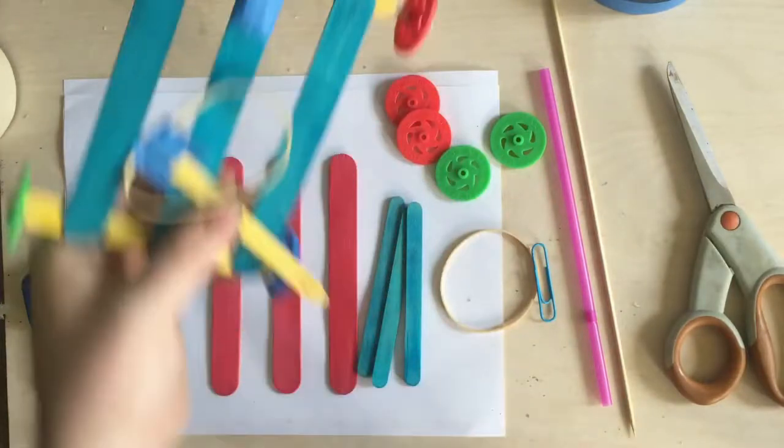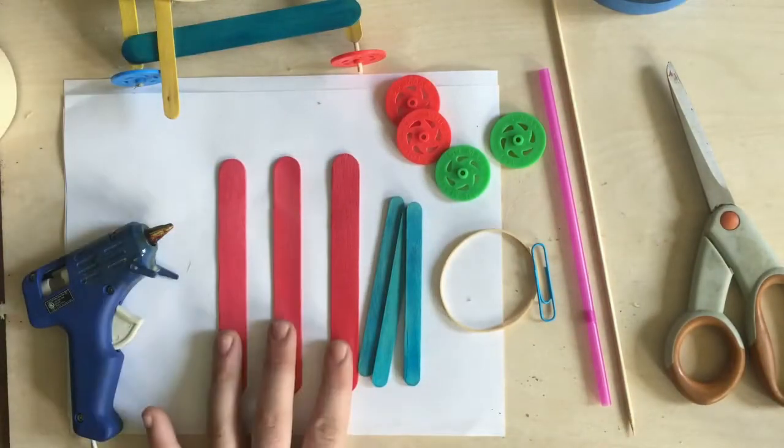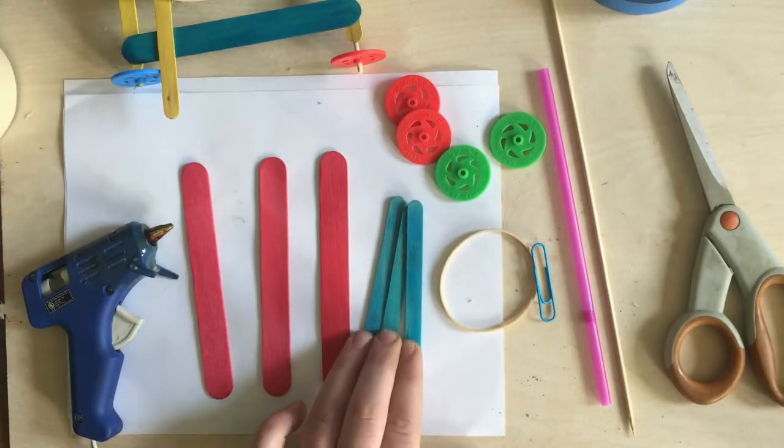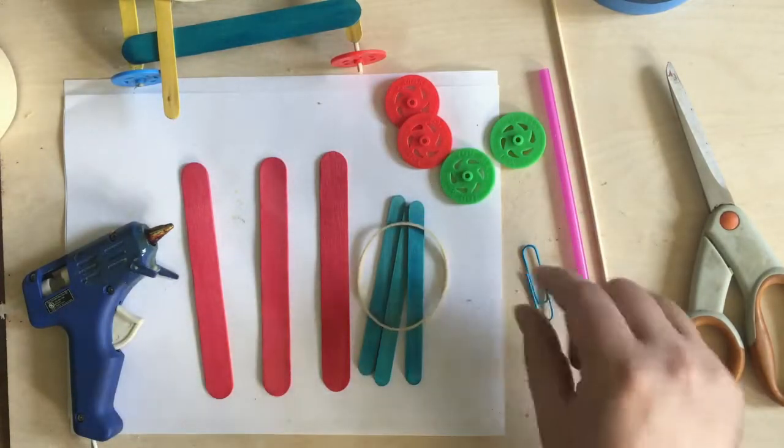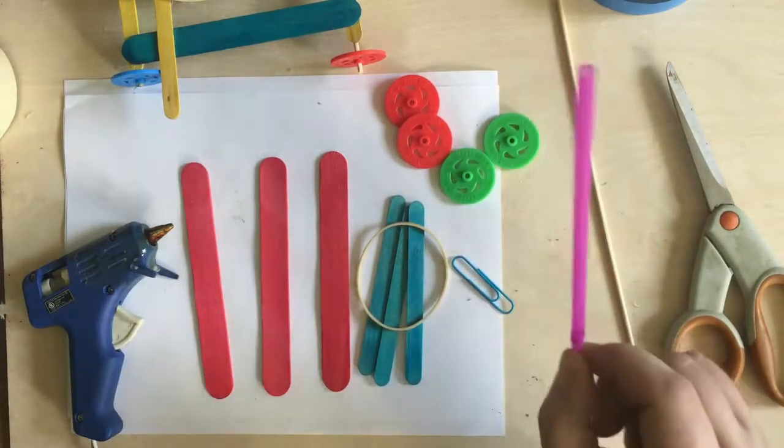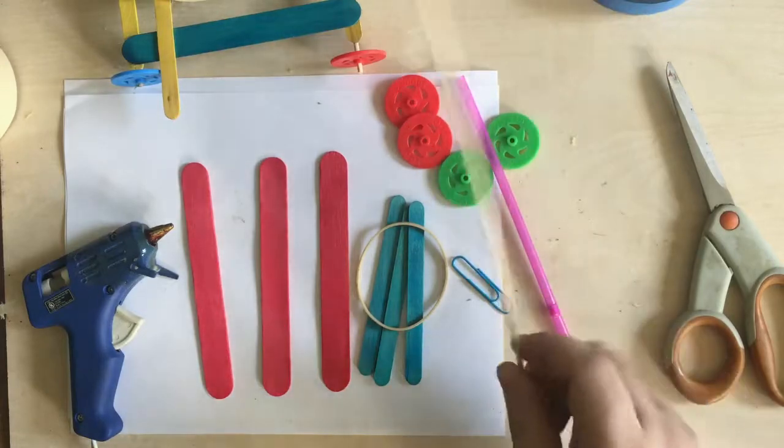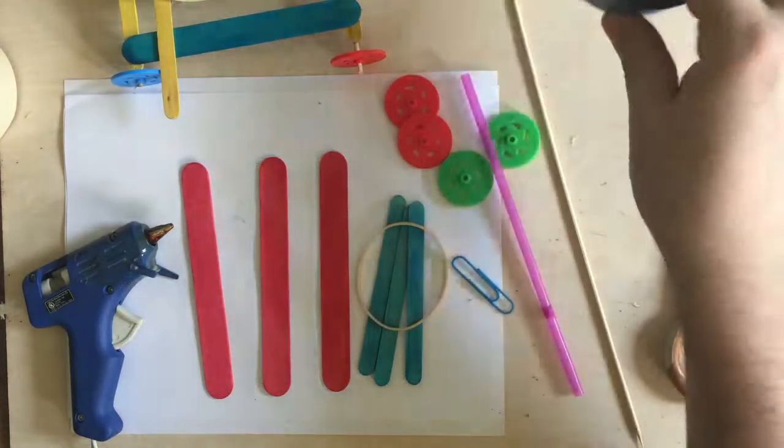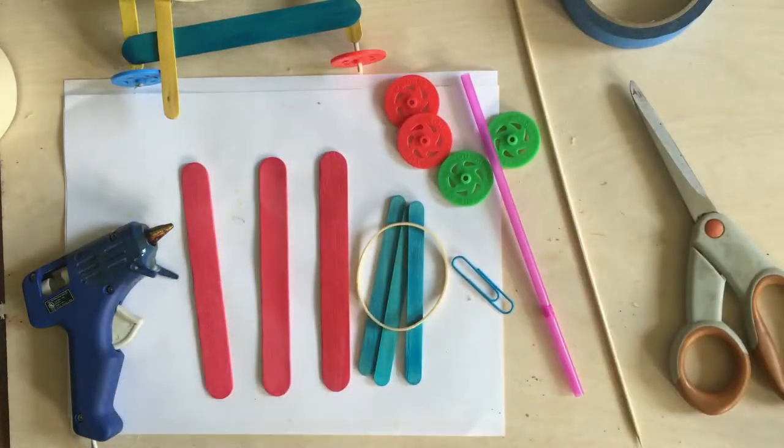Okay, to make this project we need three big popsicle sticks, three little popsicle sticks, four wheels, rubber band, paper clip, straw, and a wooden skewer, and then some tape, some scissors, and a hot glue gun.